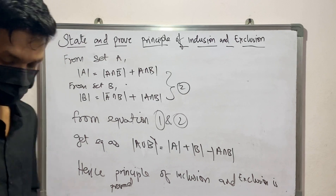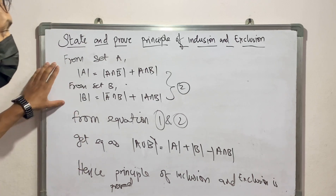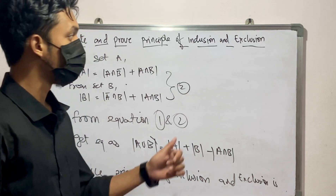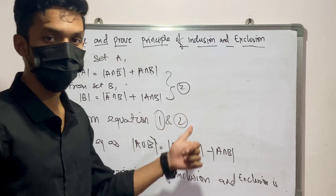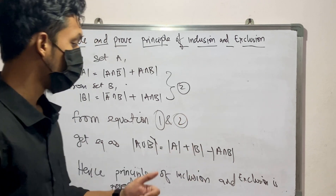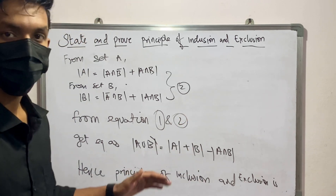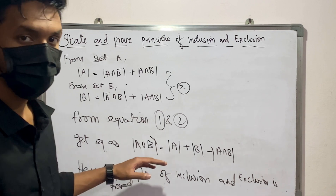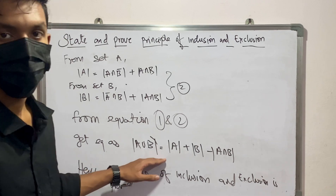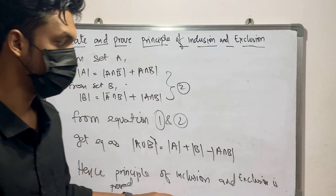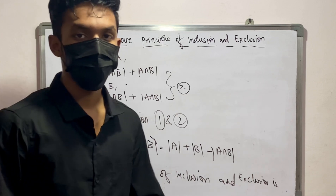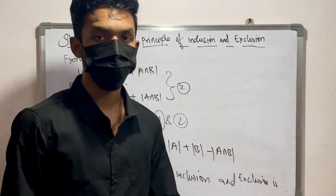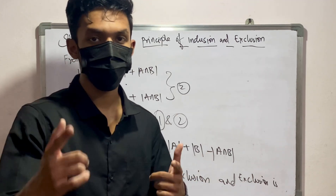So guys, this was the statement and proof of the Principle of Inclusion and Exclusion. In the next video we are going to prove other theorems like the Sum of Degrees theorem and others. If you like the video, please like, share, and subscribe, and press the bell icon.